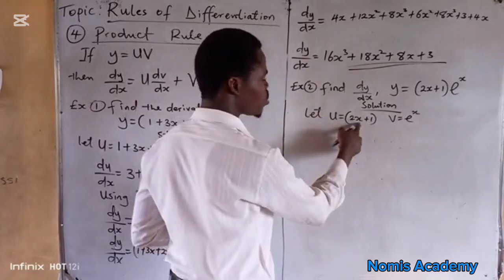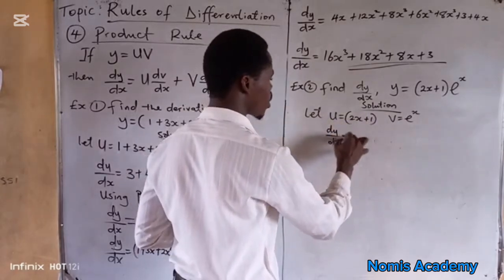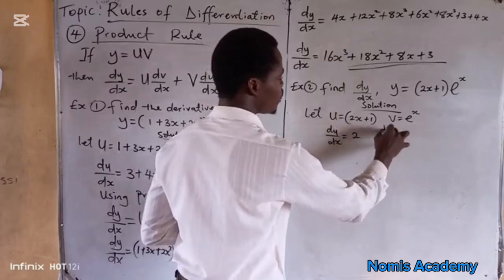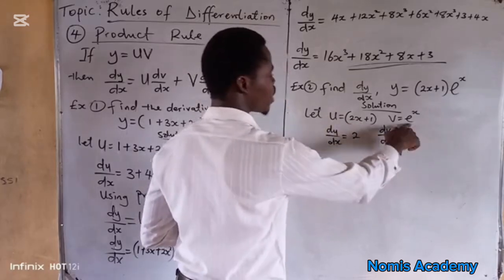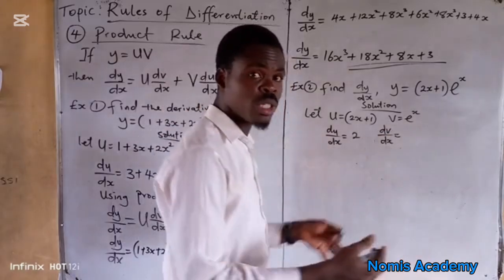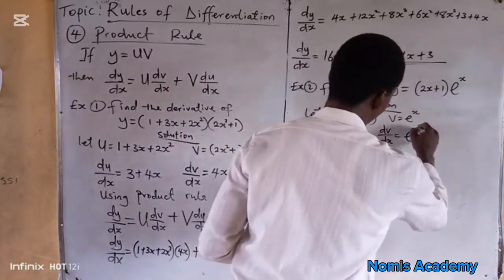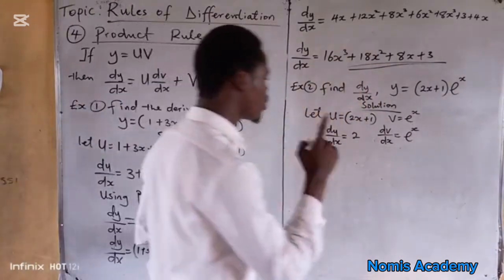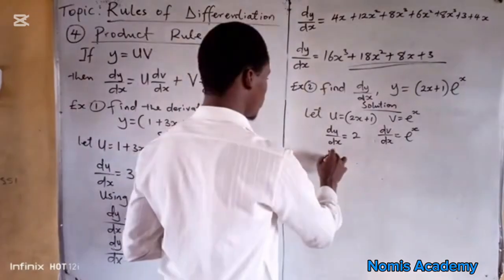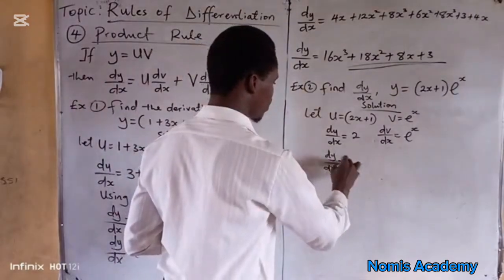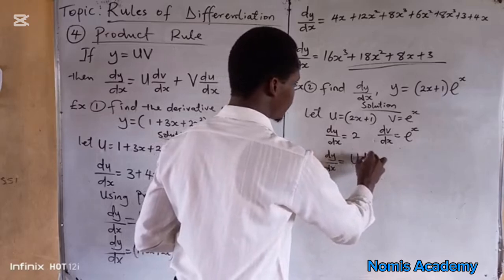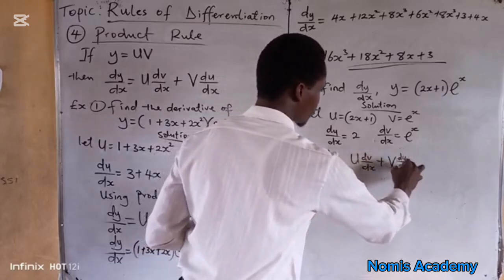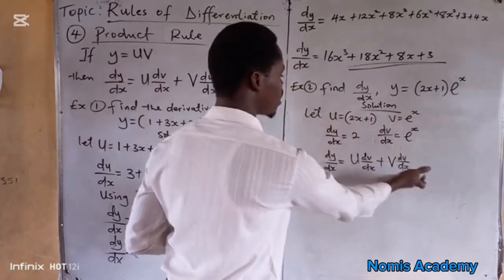Differentiate u with respect to x: du over dx equals 2. Differentiate v with respect to x: when you differentiate an exponential function, you still get back the exponential function, so dv over dx equals e to the x. Using the product rule, which states that dy over dx equals u times dv over dx plus v times du over dx.